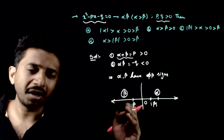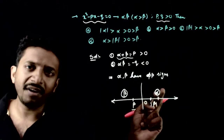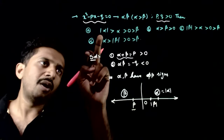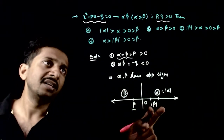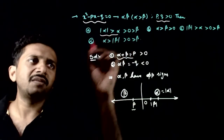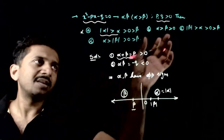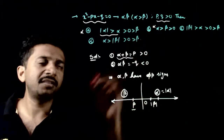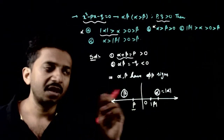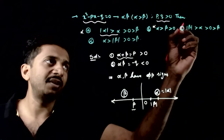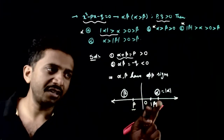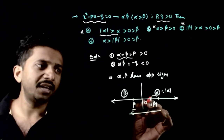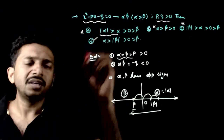So the order is: alpha, beta, mod alpha, mod beta. Since alpha is positive, mod alpha equals alpha. The correct ordering is alpha greater than mod beta, greater than 0, greater than beta. So option D is the right answer.